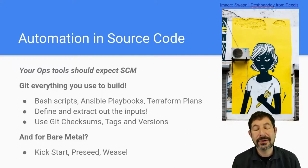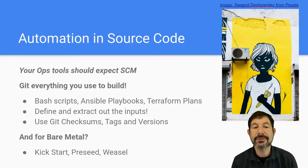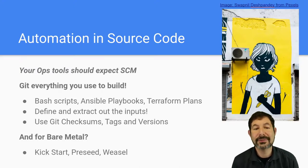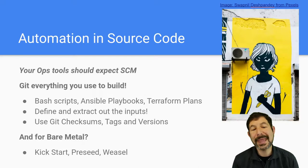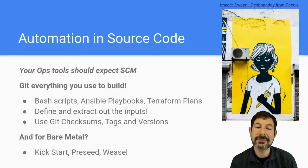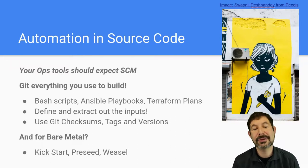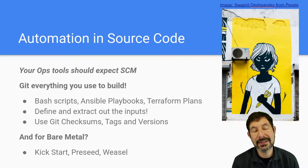So let's break down our infrastructure as code thinking. The first thing to think about is automation and source code. This one seems really obvious, but let's go deeper than just stuffing automation code into Git. The idea here is that your operations tools should expect and really demand that you're using Git and source code controls as part of your operational techniques. Things should be versioned, stored in Git, able to be extracted and tagged — all of those concepts need to be in your automation system.